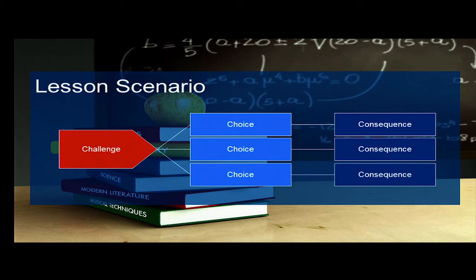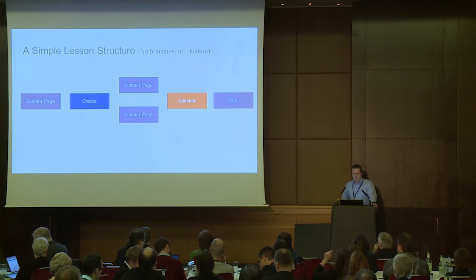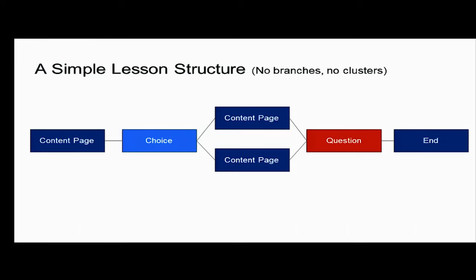So what makes up a lesson? You've basically got a challenge, a choice, and a consequence. The challenge is: what do you want that learner to do and achieve? What choices are we going to give them? And then depending on what they choose, where do we take them? That's something we do in everyday teaching in the classroom. Here's a really crude example: the challenge is to fight the dragon — with a stick, a sword, or a carrot. If you choose a stick, the dragon will laugh at you. If you choose a sword, you can slay it. If you choose a carrot, it might eat it. Every scenario can lead to a different outcome, and that's what's so great about the lesson activity. This is a really simple lesson structure — a content page, the learner makes a choice, it takes them to a simple page, back to a question to assess them, and then the lesson ends.